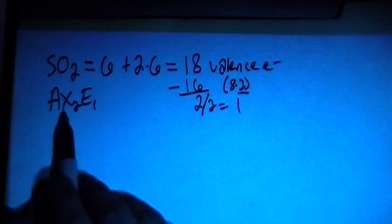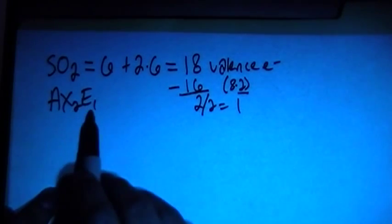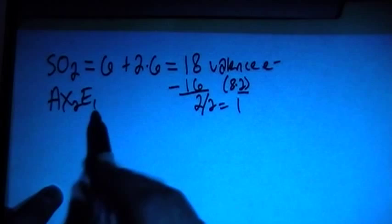Because this means that we'll have one central atom, two peripheral atoms, and then one non-bonding pair of electrons on the central atom. Alright, so let's go ahead and start to draw this thing.